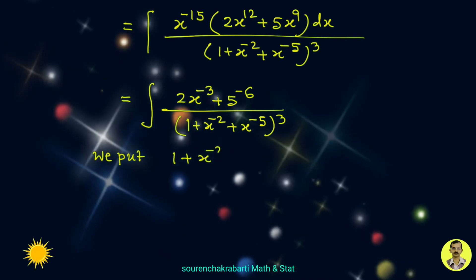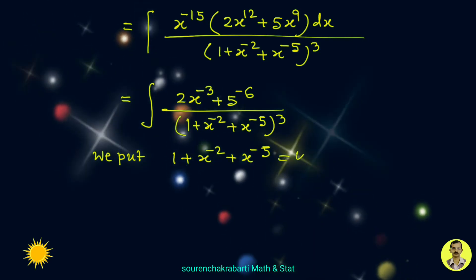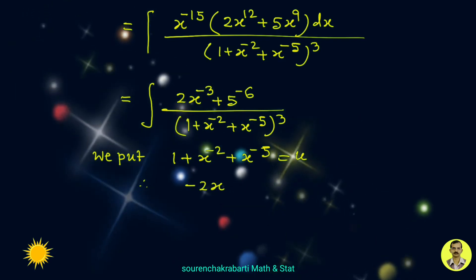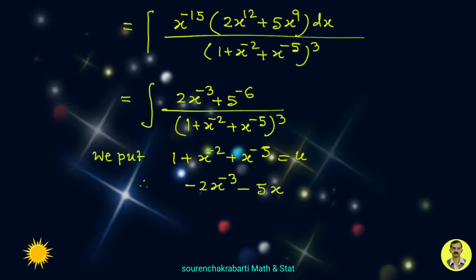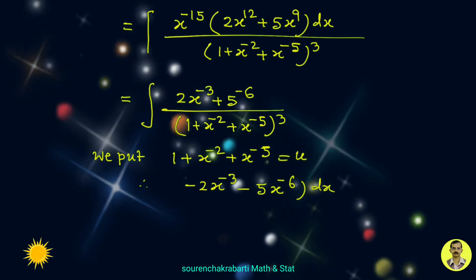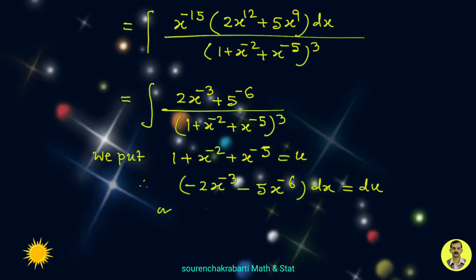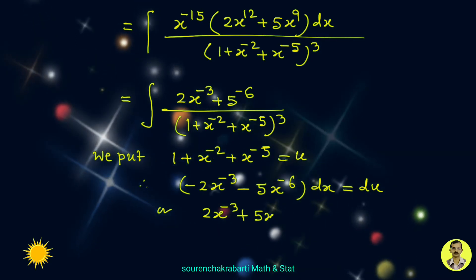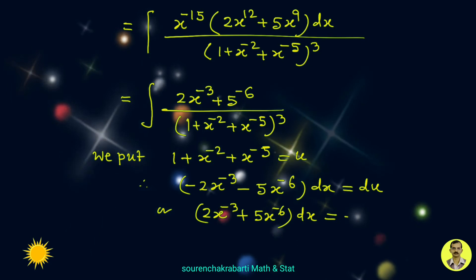We put 1 plus x to the power minus 2 plus x to the power minus 5 equals u. Taking the differential, we get minus 2x to the power minus 3, minus 5x to the power minus 6, dx equals du. Or, 2x to the power minus 3 plus 5x to the power minus 6, dx equals minus du.